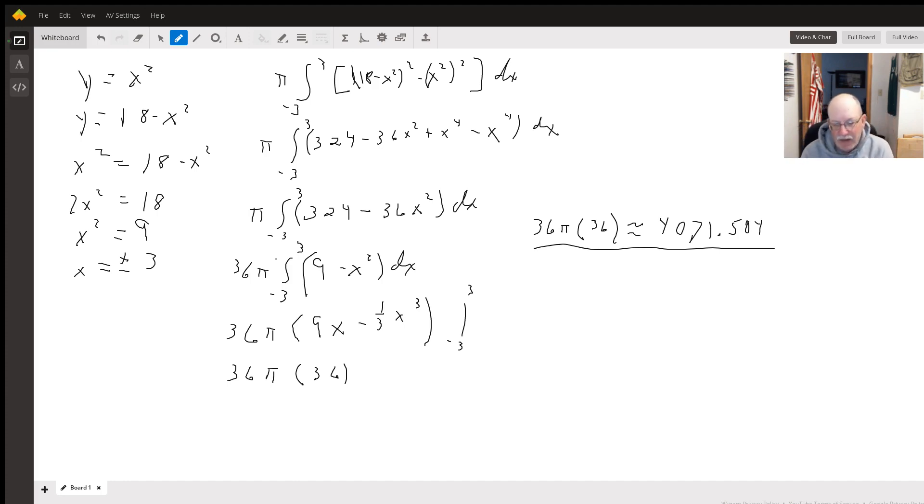We need to figure out first where those two graphs intersect. So we set x squared equal to 18 minus x squared. We get 2x squared equals 18. Divide both sides by 2, we get 9. x squared equals 9. Square root of both sides, x equals plus or minus 3.